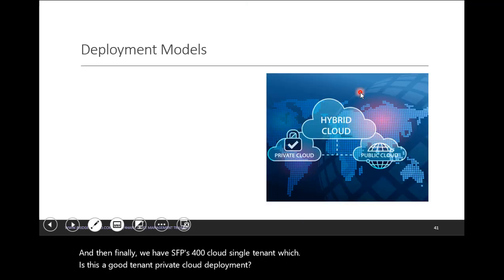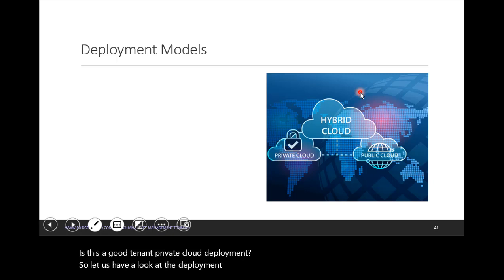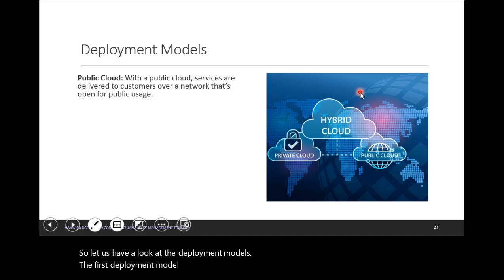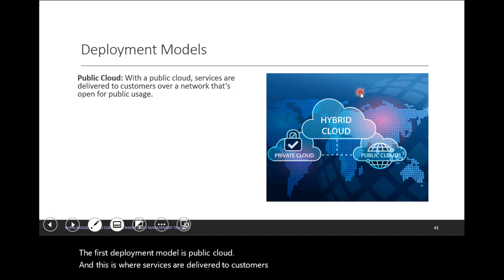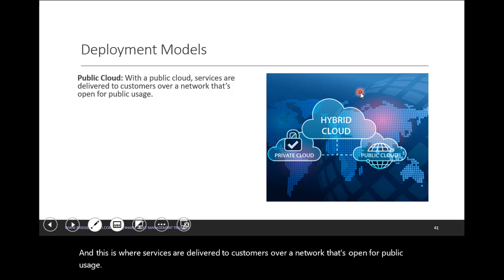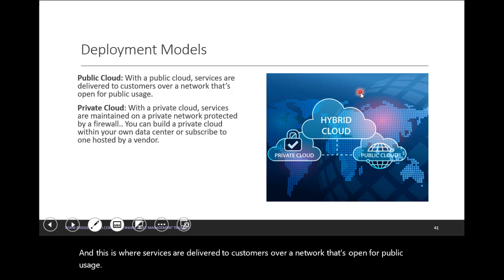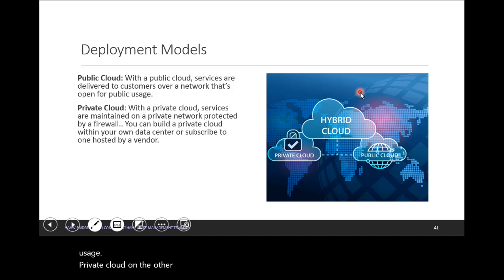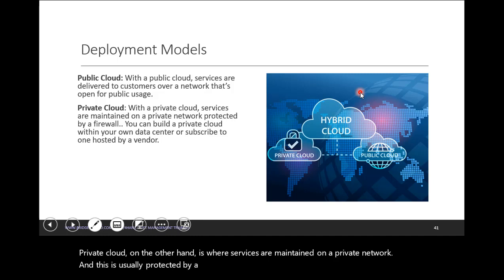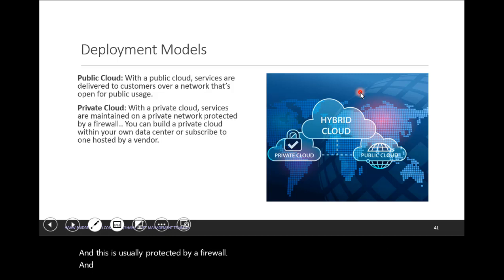Let us have a look at the deployment models. The first deployment model is public cloud, and this is where services are delivered to customers over a network that's open for public usage. Private cloud, on the other hand, is where services are maintained on a private network, and this is usually protected by a firewall.